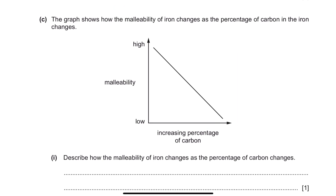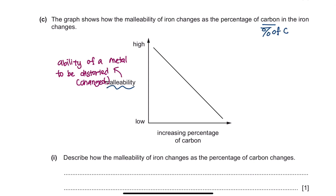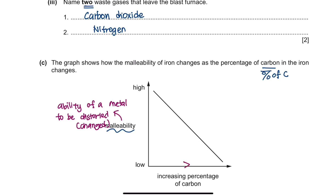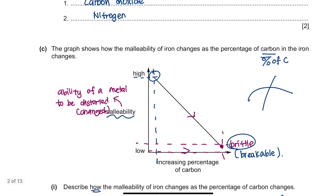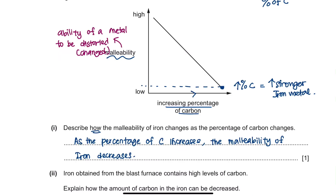Question C: the graph shows how the malleability of iron changes as the percentage of carbon changes. Malleability means the ability of a metal to be distorted or change shape easily. As the percentage of carbon increases, malleability decreases, meaning the metal becomes brittle — easily breakable. We need high malleability so the metal can be shaped easily. Therefore, it is better to have a low percentage of carbon.